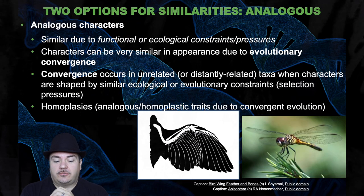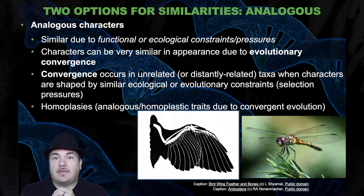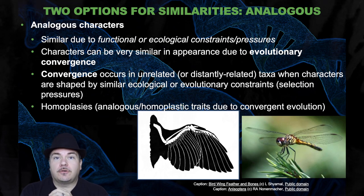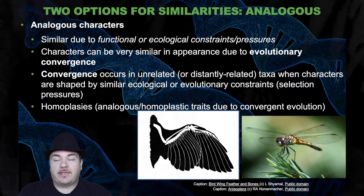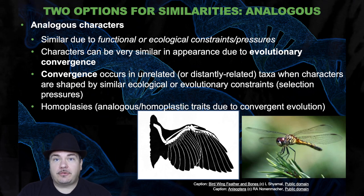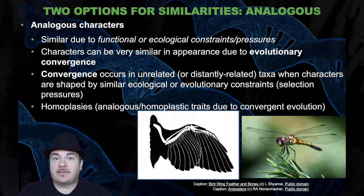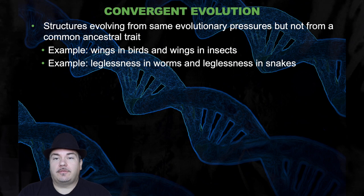The other would be analogous structures. This is similarity due to functional or ecological constraints or pressures — similar selective pressures, not necessarily a recent common ancestor. Characters can be very similar due to evolutionary convergence. Convergence occurs in unrelated or distantly related taxa when characters are shaped by similar ecological or evolutionary constraints and natural selection. These result in homoplasies, which are analogous traits due to convergent evolution. For example, the wing of a bird and the wing of an insect serve similar purposes — they arose through similar selective pressures of having the ability to fly — but those two structures are not there because a recent common ancestor had that structure. Structures evolving from the same evolutionary pressures, but not from a common ancestor having that trait.